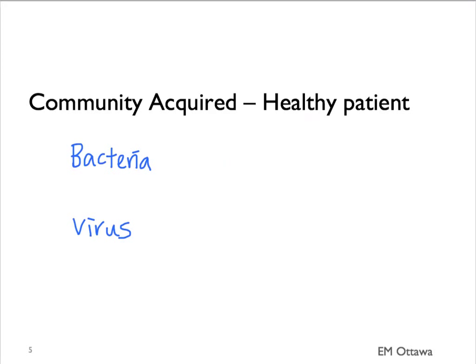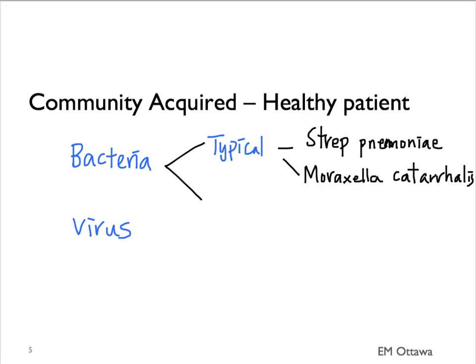Let's talk about our most basic patient: a healthy patient who comes from home and lives independently — so a community-acquired pneumonia. It can be caused by bacteria or virus. Bacterial infection is divided into typical or atypical bacteria. Typicals are the ones that give the most typical signs and symptoms, which we'll discuss further. The bacteria include Strep pneumoniae, Moraxella catarrhalis, and Haemophilus influenzae, or H. flu for short.